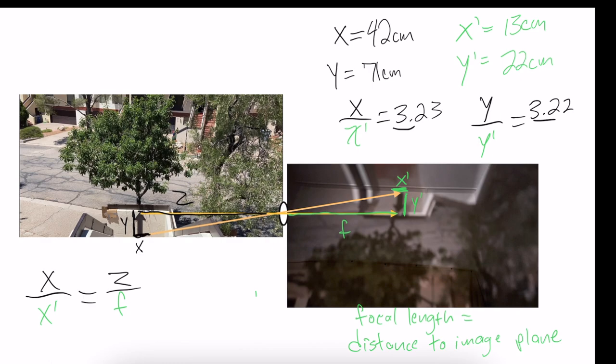Using the second of these relationships, I'm going to go ahead and solve for X prime in terms of everything else in that equation. My equation becomes X prime equal to F X over Z.